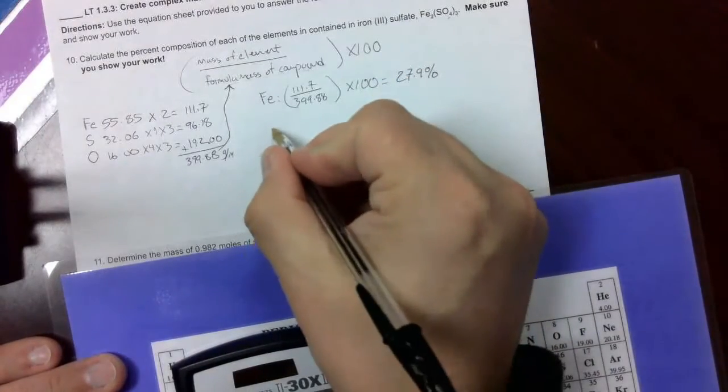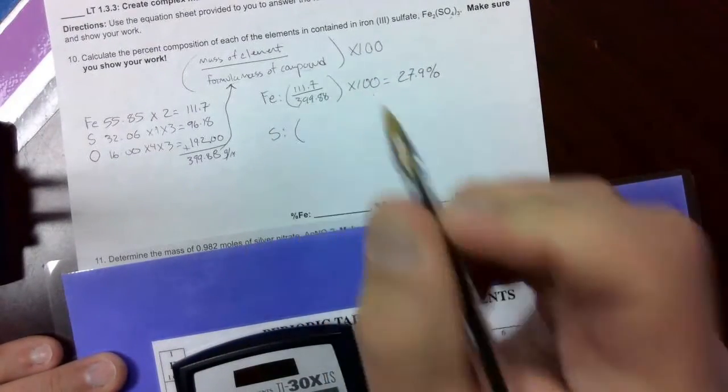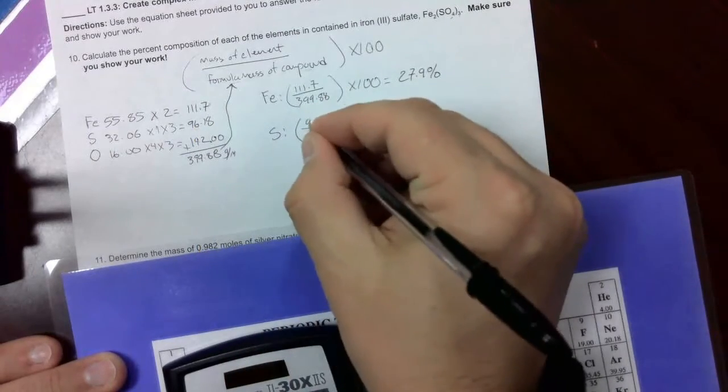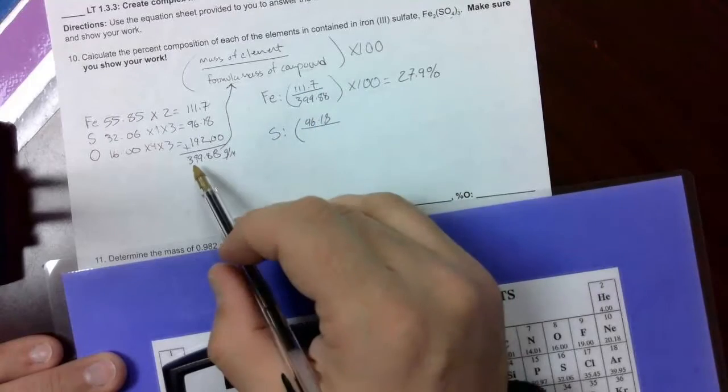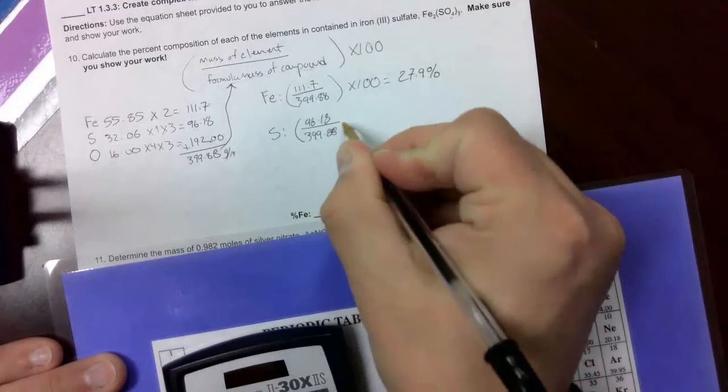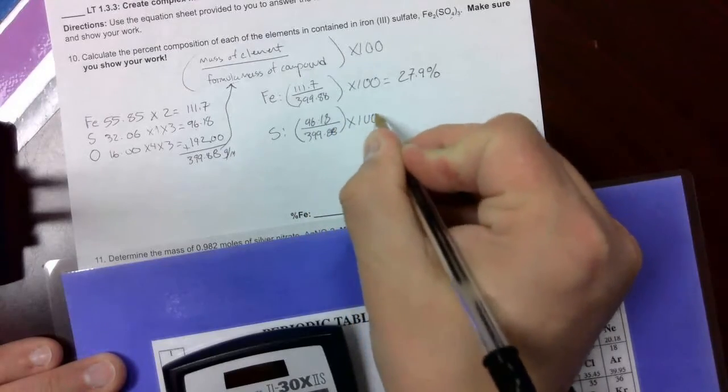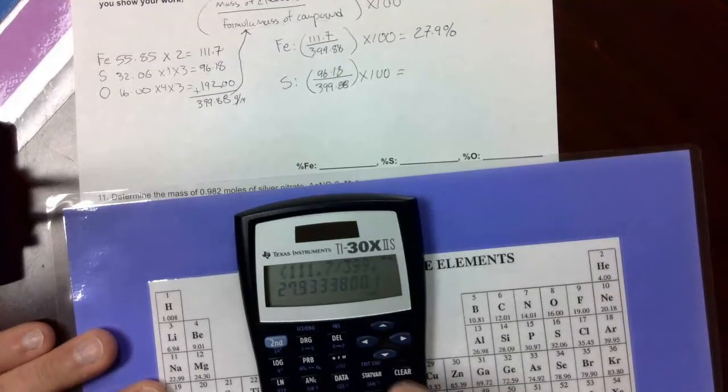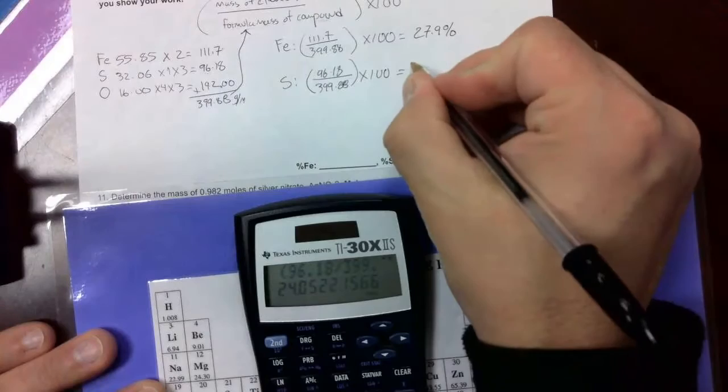We'll follow the same steps for sulfur, except the top of our fraction will be a different value, 96.18. The bottom will be the total mass of the whole compound, 399.88, times 100. Let's type this into our calculator. We get 24.1%.